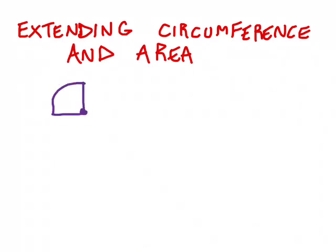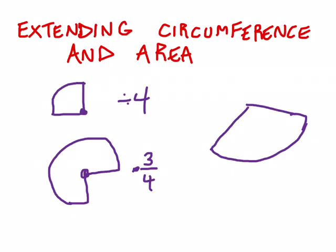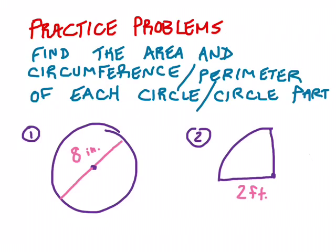That same thinking applies to any portion of a circle, for both area and circumference. For quarter circles, divide by 4. For three-quarter circles, multiply by 3/4. You might even see something like 120 degrees of a circle — since a whole circle is 360 degrees, you take that fraction of the full measurement. Here are your practice problems: for each one, find both the circumference and the area. Good luck!